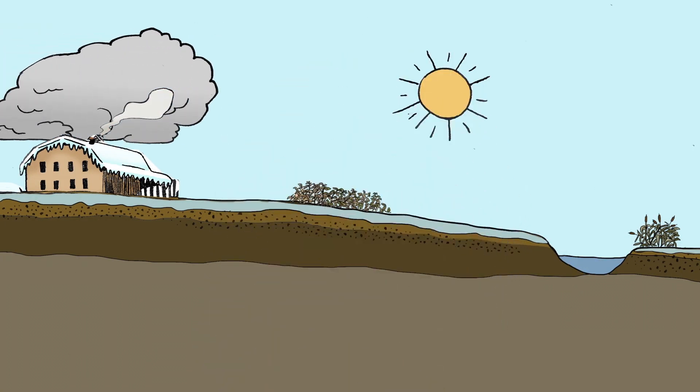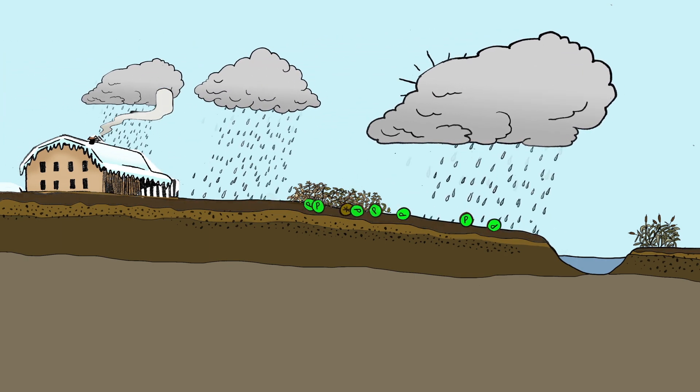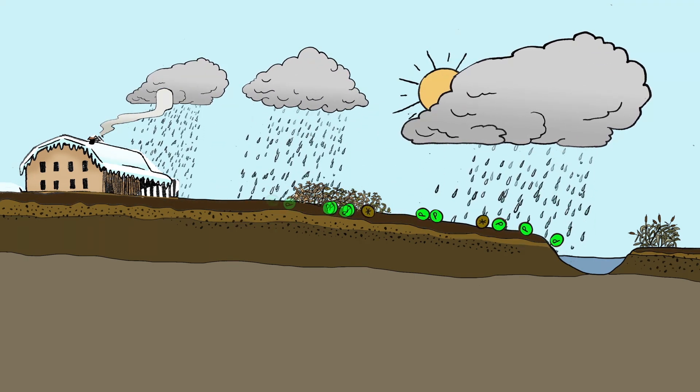Water from melting snow combined with early spring rains carries manure and nutrients across this impervious layer and off of the field.